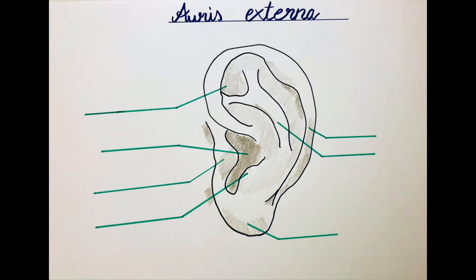The shape of the auricle varies and is determined by elastic cartilage, but for everyone it's a funnel-shaped fold of skin. The ear lobe — the part where for some people there's an earring — is only fat tissue and no cartilage. It's the only structure of the outer ear which is only fat tissue. The external acoustic meatus lies in between the auricle and the tympanic membrane, or the eardrum, where the middle ear starts.